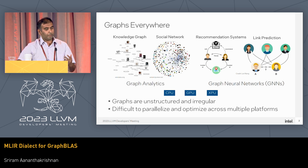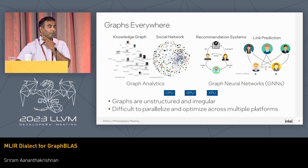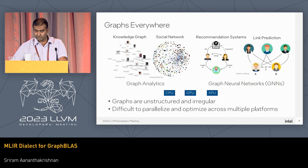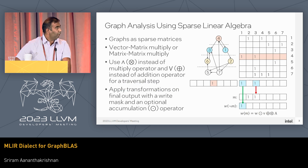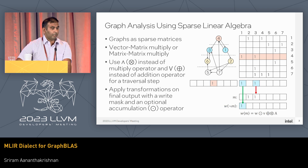This is because graphs are highly irregular. Moreover, when you optimize on one platform, the optimizations are not necessarily portable across other platforms. One way to tackle this is to approach it from sparse linear algebra.